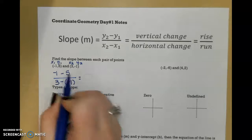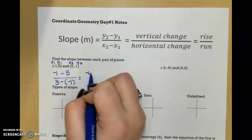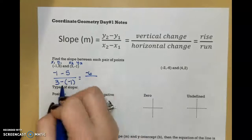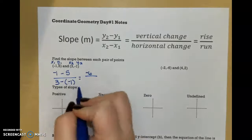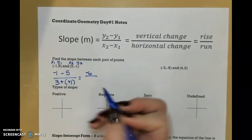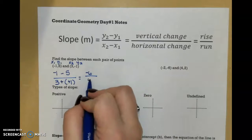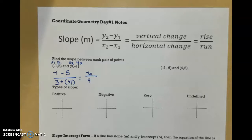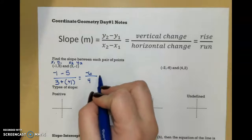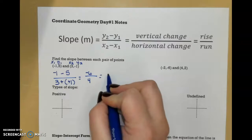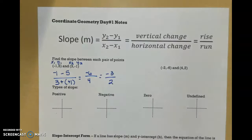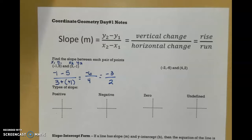So negative 1 minus 5 is negative 6. And when I have minus and negative, that becomes plus plus. So 3 plus 1 is 4. And I always want my slope to be in reduced form, so I'm going to reduce this down to negative 3 over 2. And that is my slope for this first set of points.